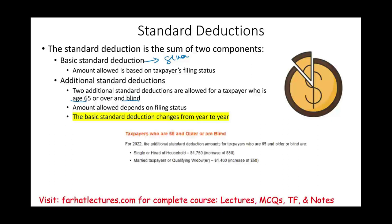For tax year 2022, if you are over 65 or blind and single, you get an additional $1,750 — an increase of $50 from 2021's $1,700. For married taxpayers or qualifying widow/widower, the additional amount is $1,400, also up $50 from the prior year. If you are both over 65 and blind, you combine both additional deductions.